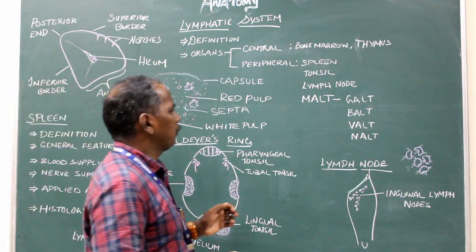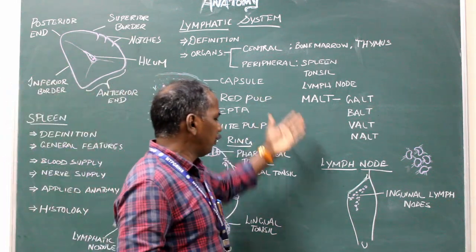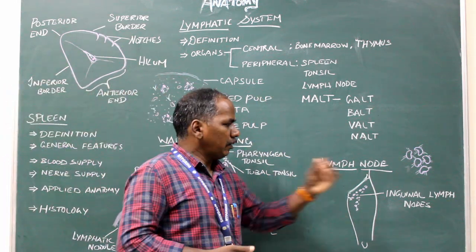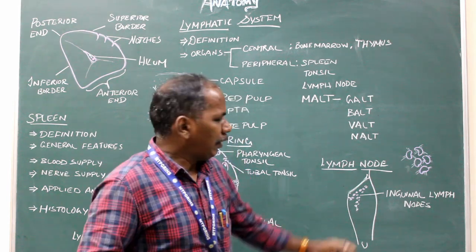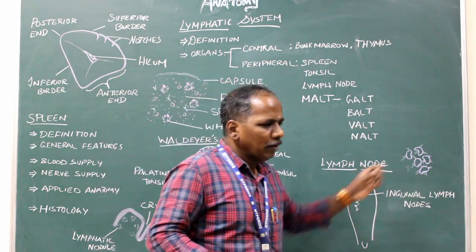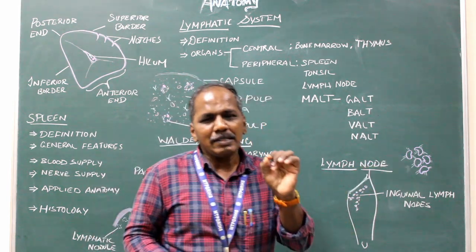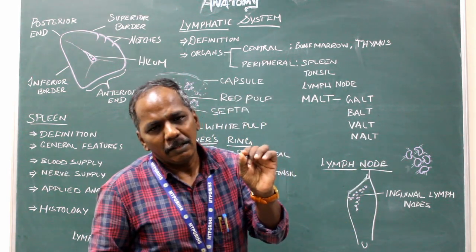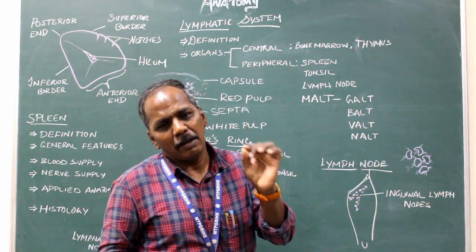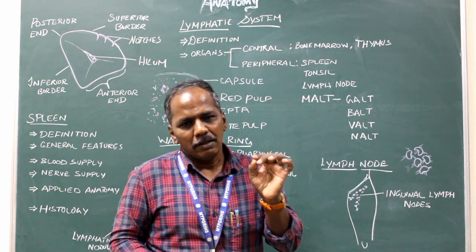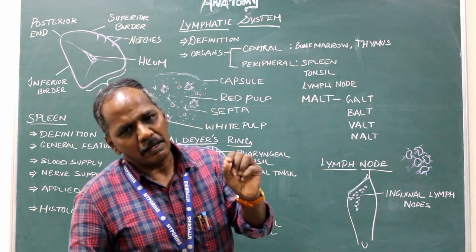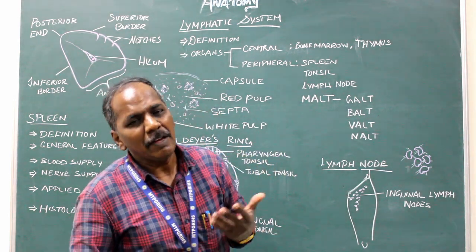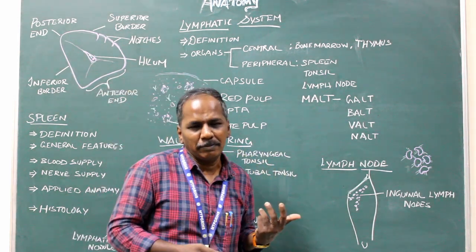Next, the lymph node. It is a bean-shaped lymphatic organ situated in various parts of the body.